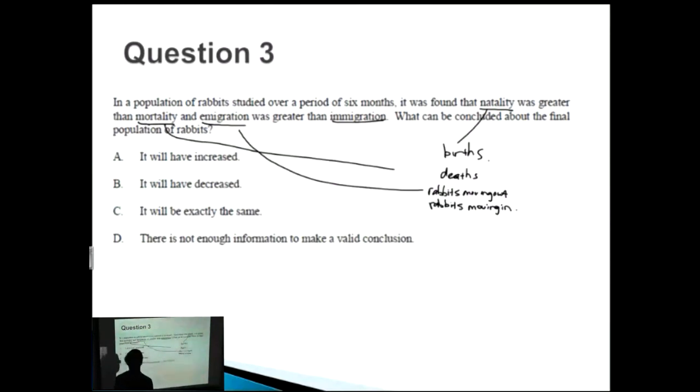What can be concluded about the final population of rabbits? First of all, we know that natality is greater than mortality. So births were greater than deaths. Therefore, we have a net positive from the births and deaths. How about emigration? Emigration was greater than immigration, so that actually means we have a net negative because we have more rabbits moving out. So we have a positive and a negative.